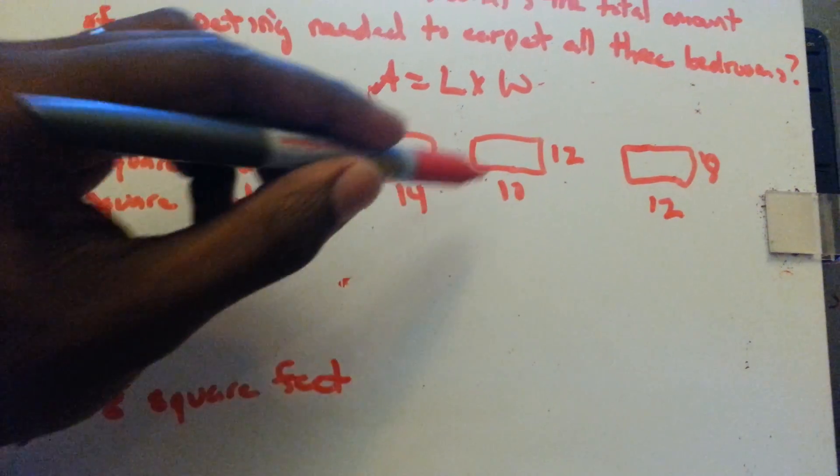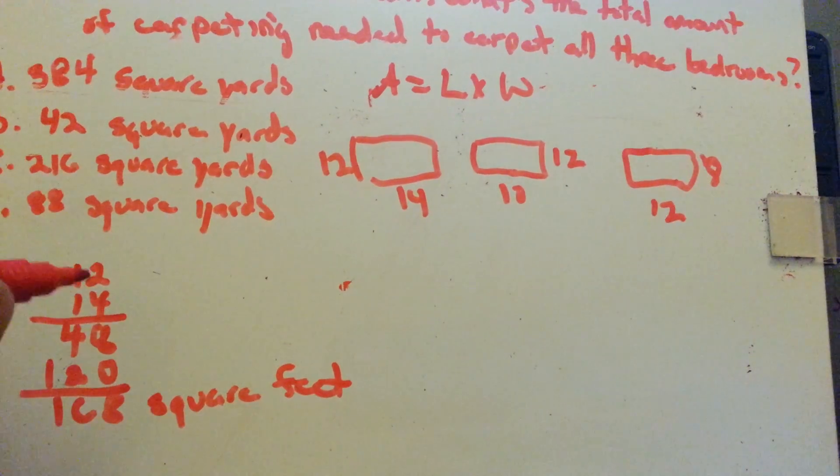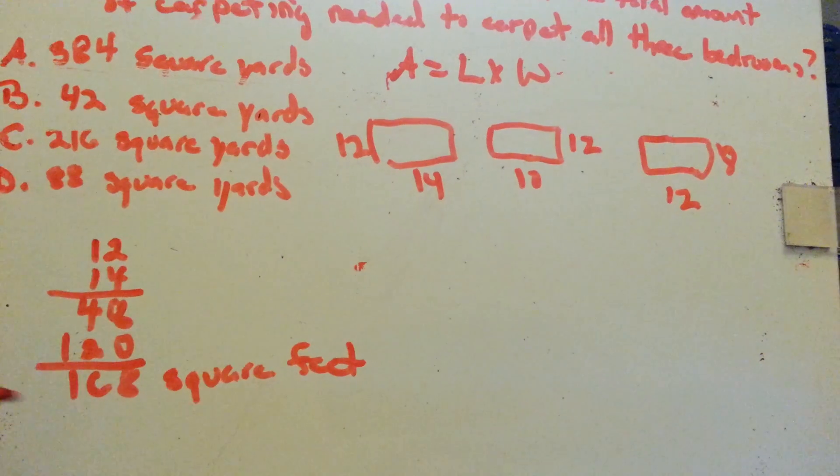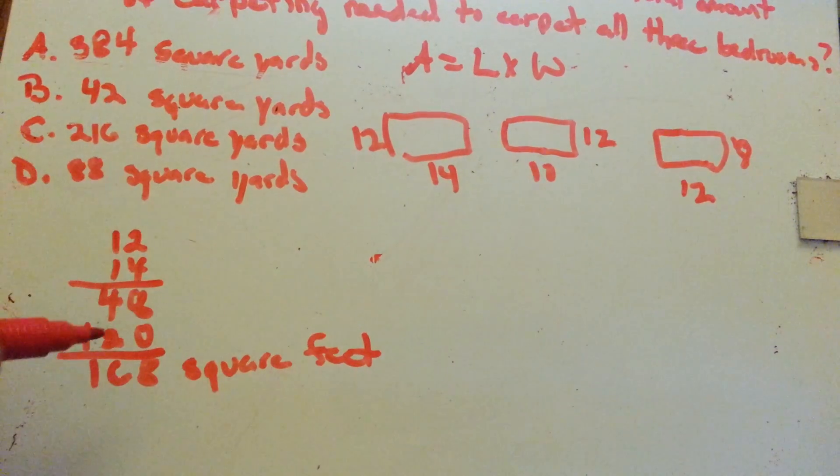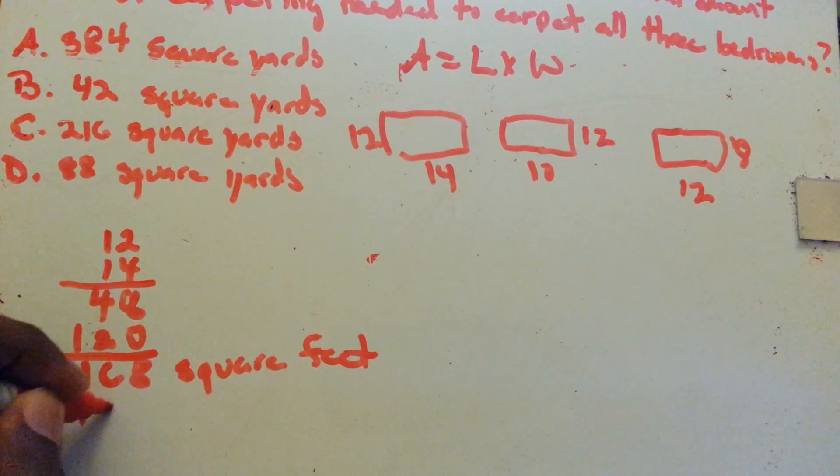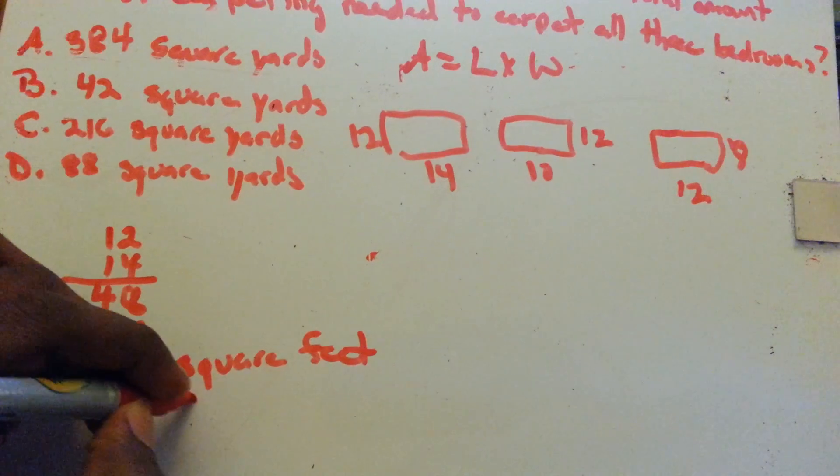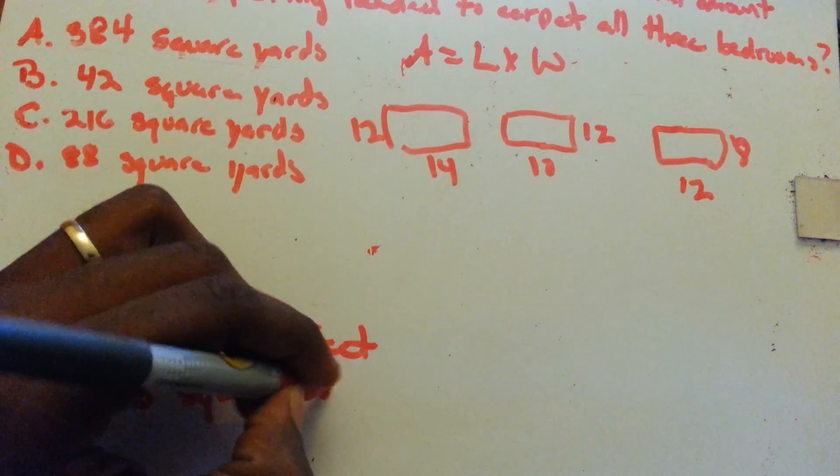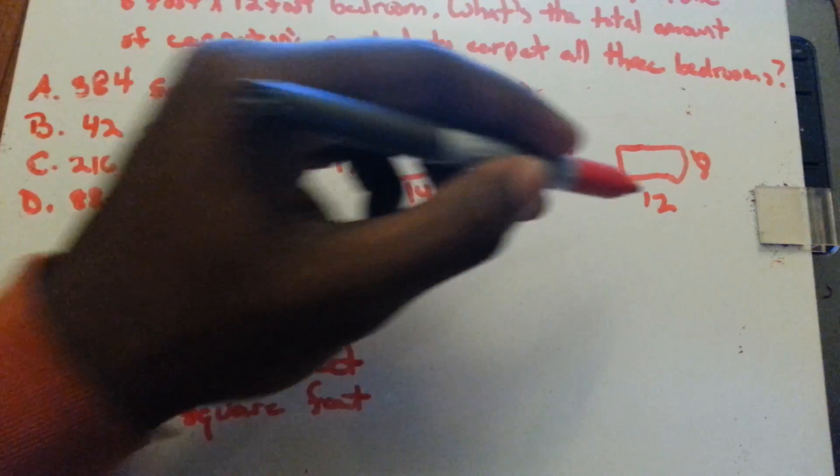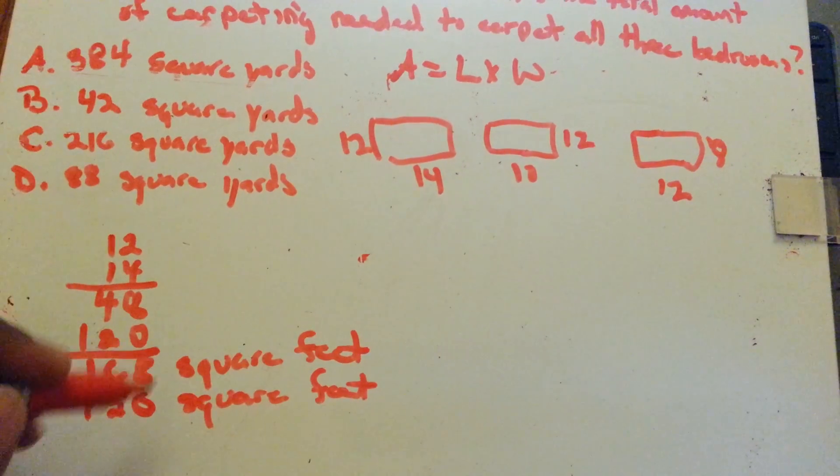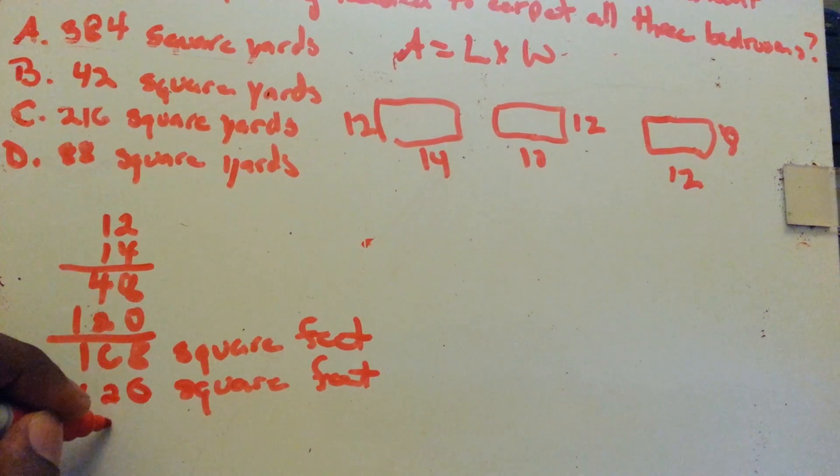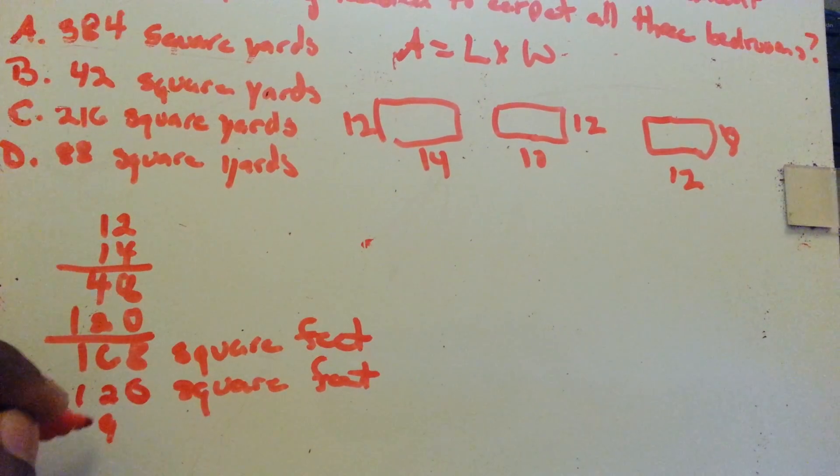The next room is 10 by 12. I'm not going to do out the math, 10 times 12 is just 120. And the last room is 8 by 12, which is 96.